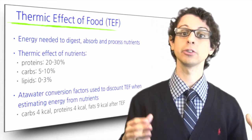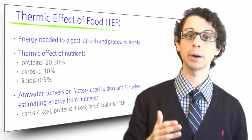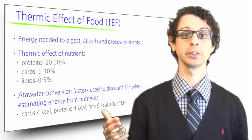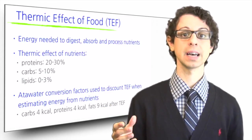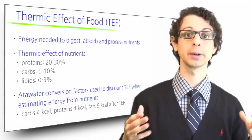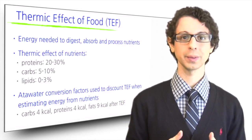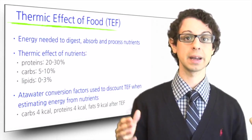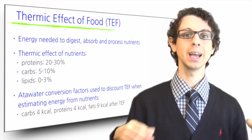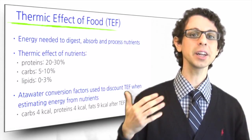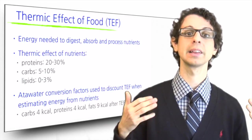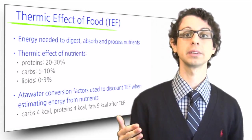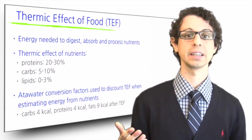These values are actually approximations used to discount thermogenesis and are called Atwater conversion factors, from the name of the scientist who first proposed them about a century ago. In reality, the total thermic effect of a meal is variable and also depends on the total amount of food we eat. If we eat a lot at the same time, the thermic effect is a little higher. Alcohol also has a thermic effect, which is about 20% of its energy content.